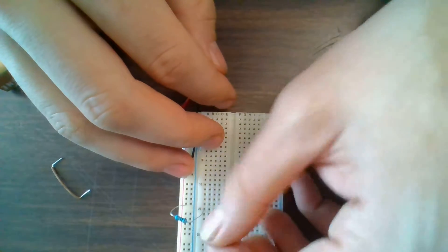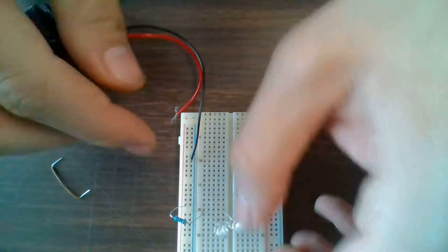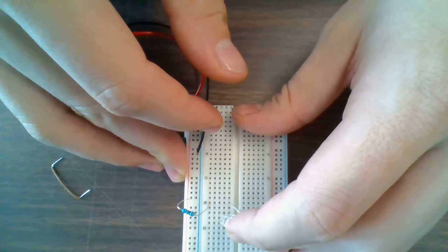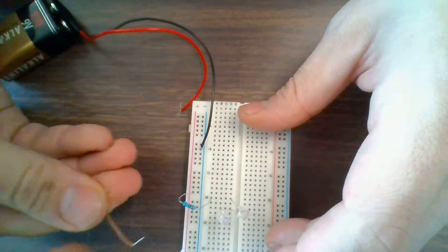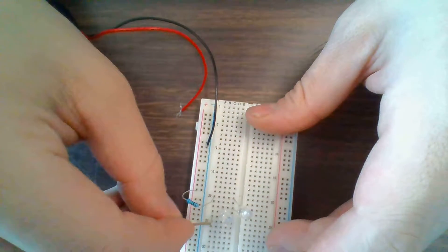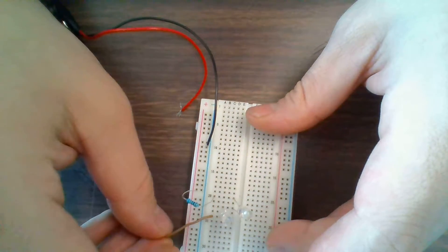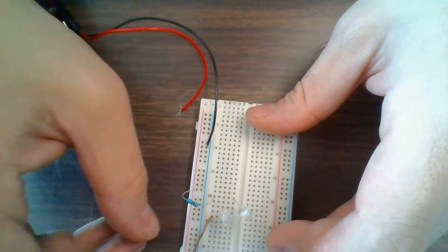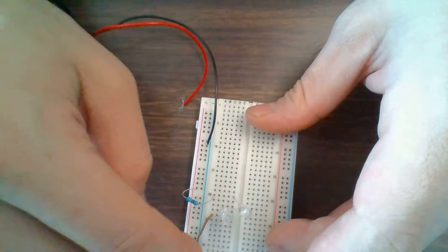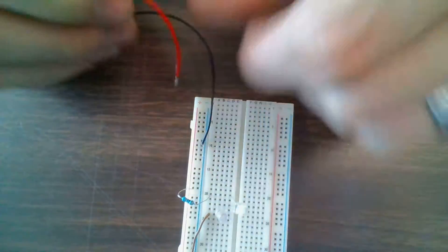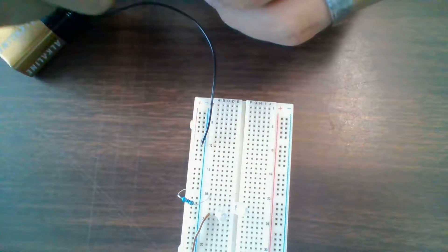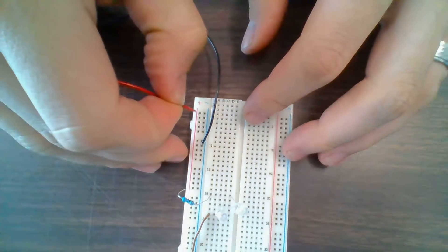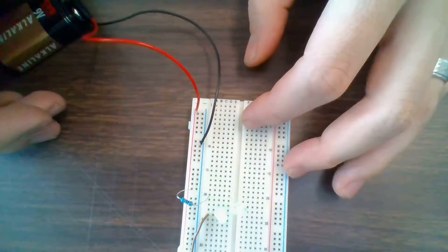So I'm going to put the long positive end of the LED into row 22 and I'm going to put the negative end in row 24. Now I can take my wire again and I'll plug it into the same row as the negative part of the second LED and I'll plug it into the negative part of the breadboard. I'm going to put my power supply back together and there we've got both LEDs are on.